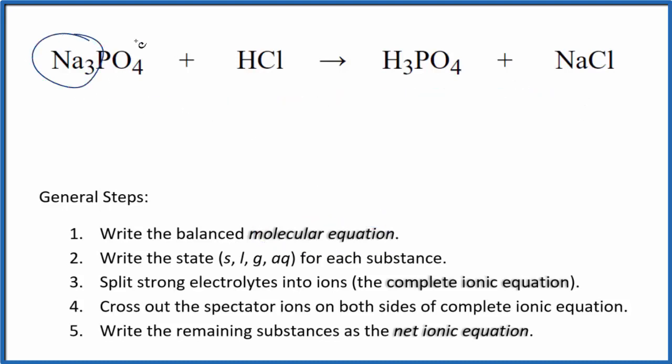There are three sodium atoms here and just one here. Let's put a three in front of the sodium chloride. That balances the sodiums. Now we have three chlorine atoms. If we put a three here, that's good. We've got the three chlorines, three hydrogens, three hydrogens, and then we have a phosphate ion here and here. This is the balanced molecular equation.